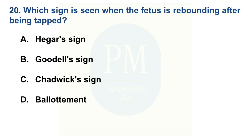Which sign is seen when the fetus is rebounding after being tapped? Option A: Hagar sign. Option B: Goodell sign. Option C: Chadwick sign. Option D: Ballottement. The correct option is Option D — Ballottement.